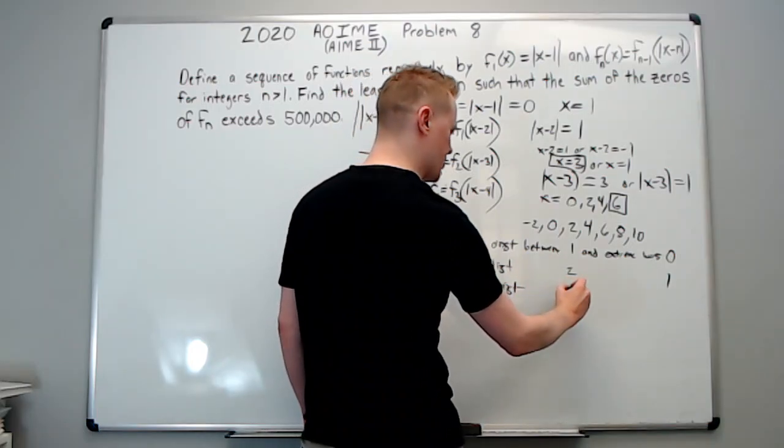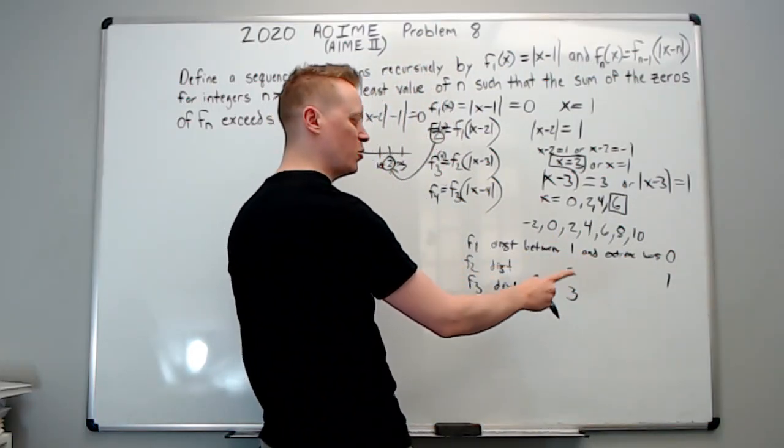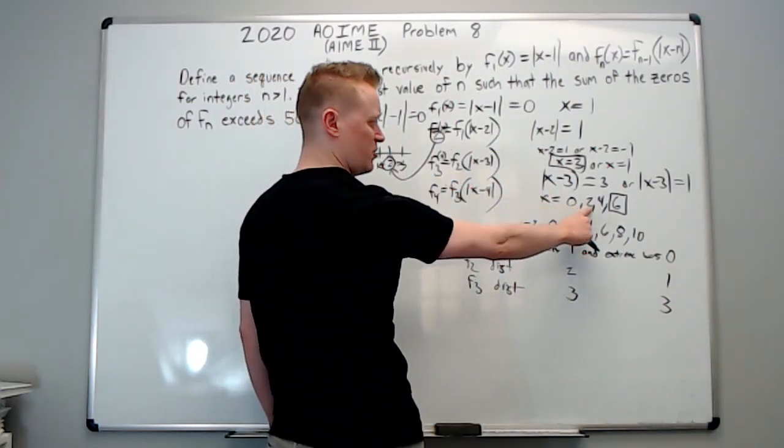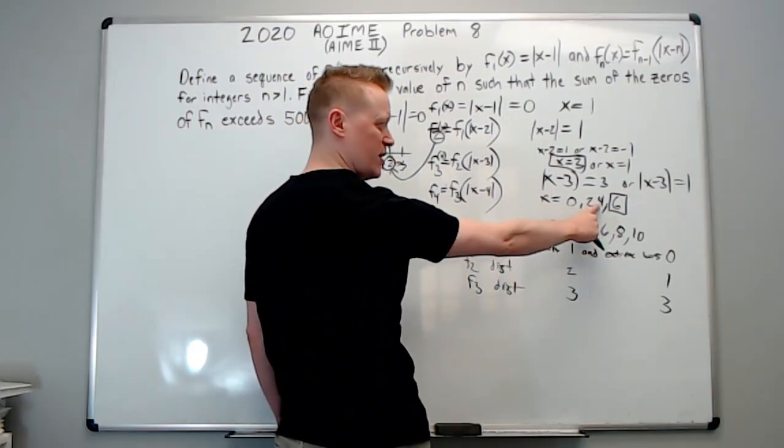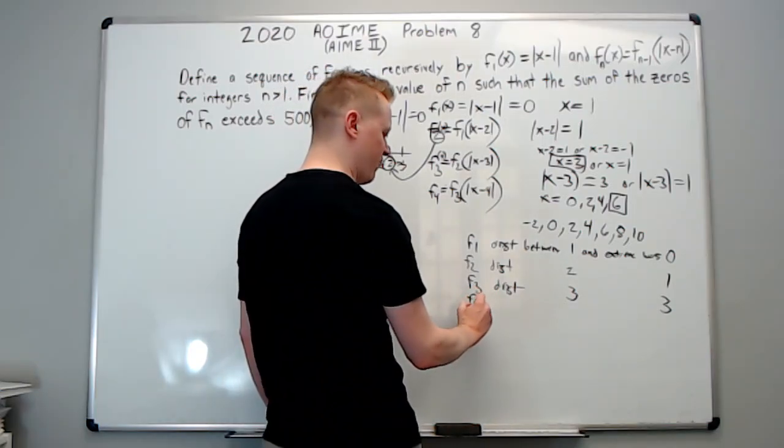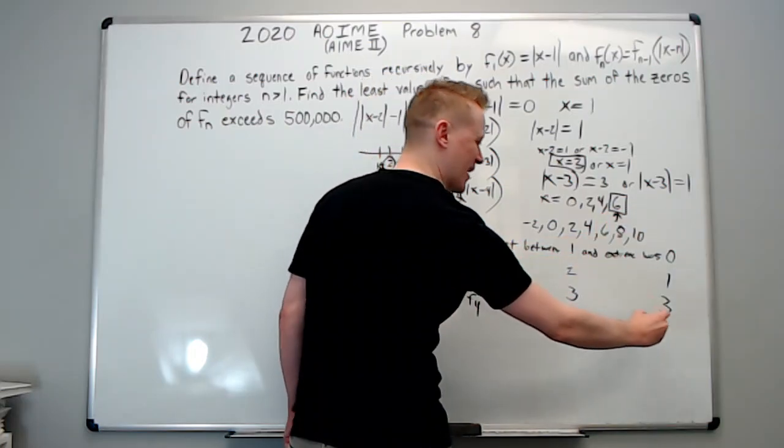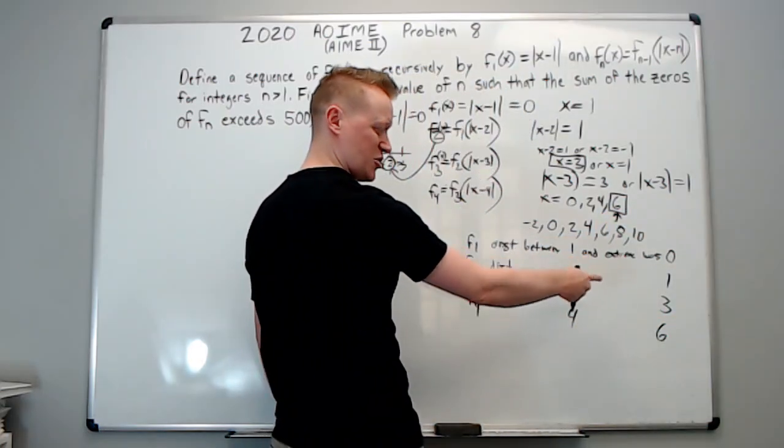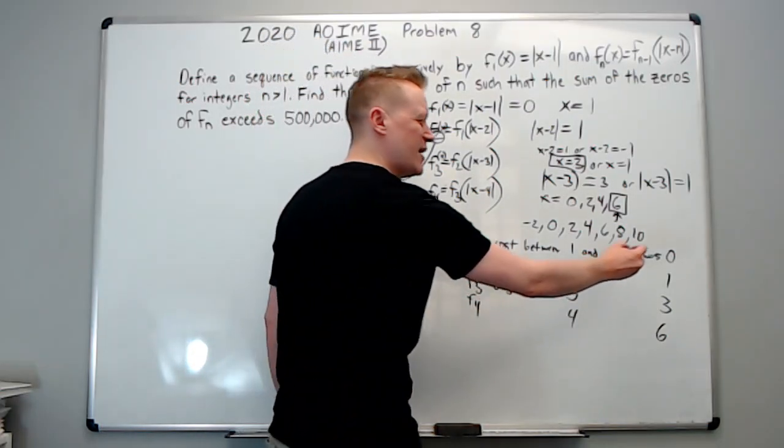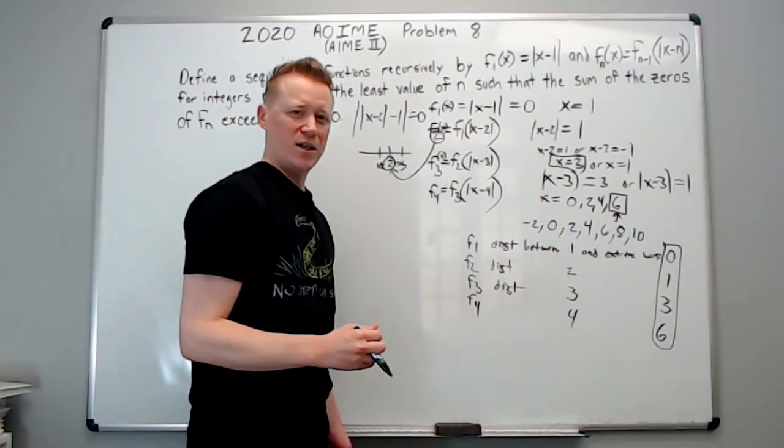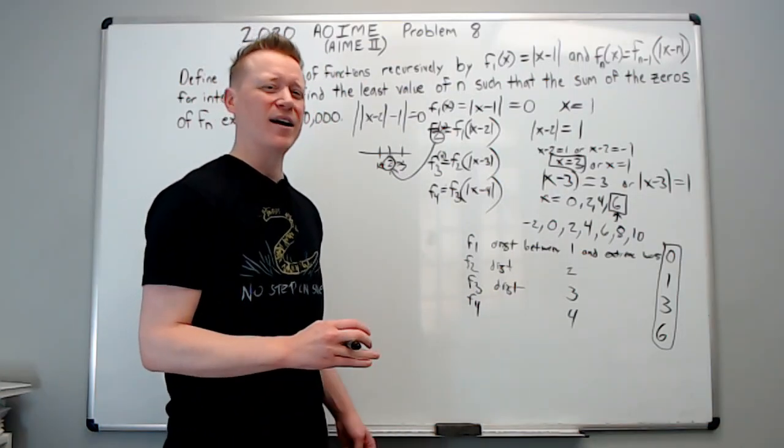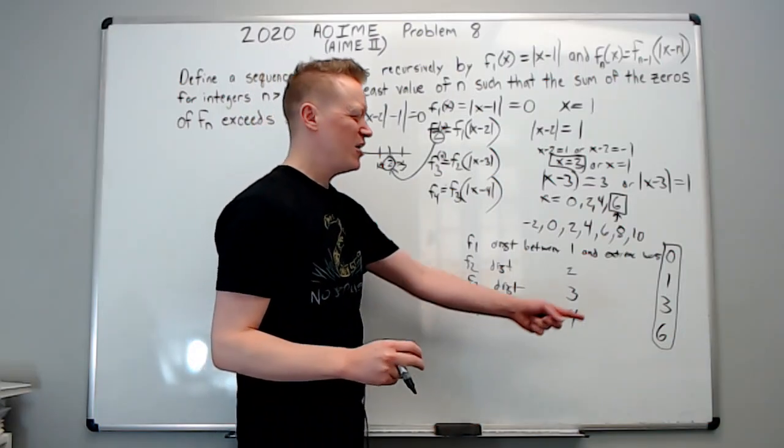For F of four, we noticed that that distance was six. The distance from four and the extreme zeros was six. So now we have to use our powers of observation. What are these numbers over here? Well, if you have a lot of experience, but if you've made AIME or AOIME for that matter, you should have a decent amount of experience. You should recognize these. They are called the triangular numbers. It's because this is just zero, this is just one, this is one plus two, and this is one plus two plus three, and so on. It's the sum of the numbers from one to that number.